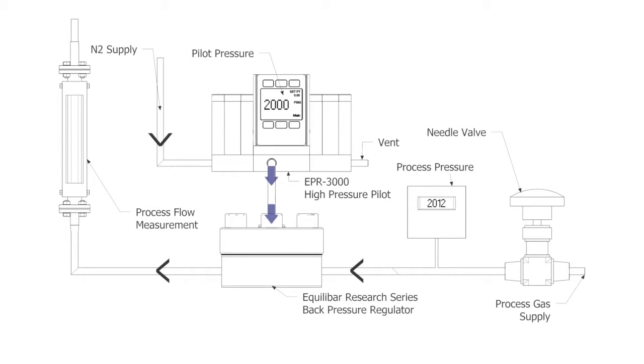The control pressure from the EPR3000 supplies the dome port of the Equilibar Back Pressure Regulator, which precisely controls process gas pressure to closely match the supplied pilot pressure.